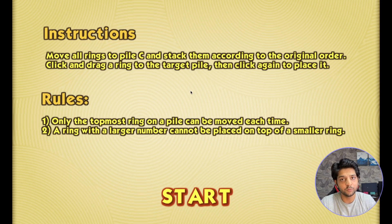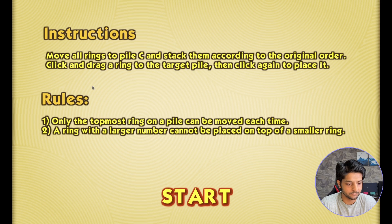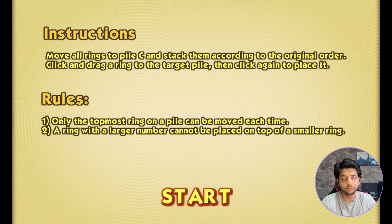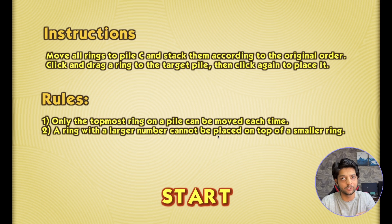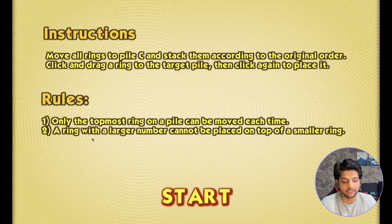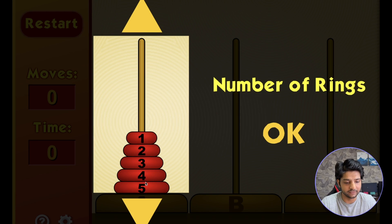The objective is to move all the rings from tower A to tower C, stacked according to their original order. There are just two rules: one, we can only move the topmost ring each time — we cannot move two or three rings at once. Two, a ring with a larger number cannot be placed on top of a smaller ring. So if I have these rings, I cannot put four on top of three.